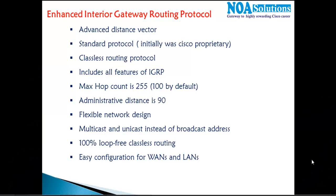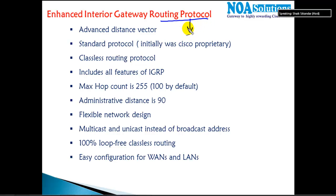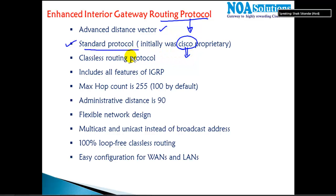The next protocol we'll be discussing after RIP is EIGRP. EIGRP is one of the most commonly used protocols. It's also called an advanced distance vector protocol or a hybrid protocol, as Cisco generally calls it. It was developed by Cisco as a proprietary protocol, but Cisco later made it a standard protocol.